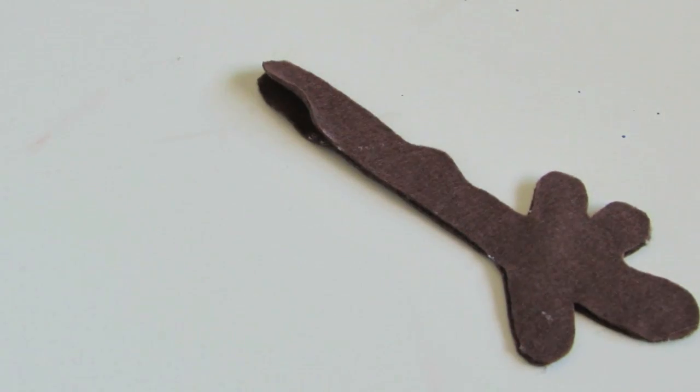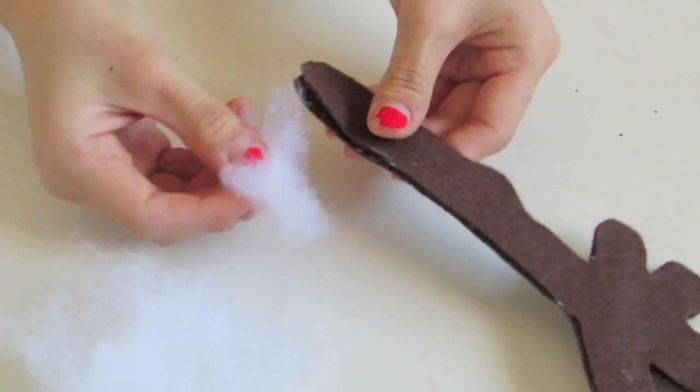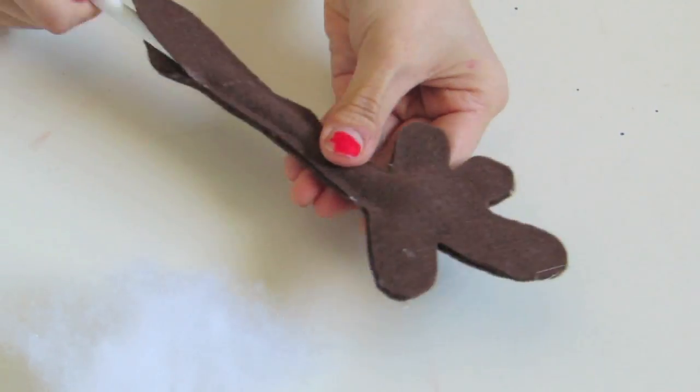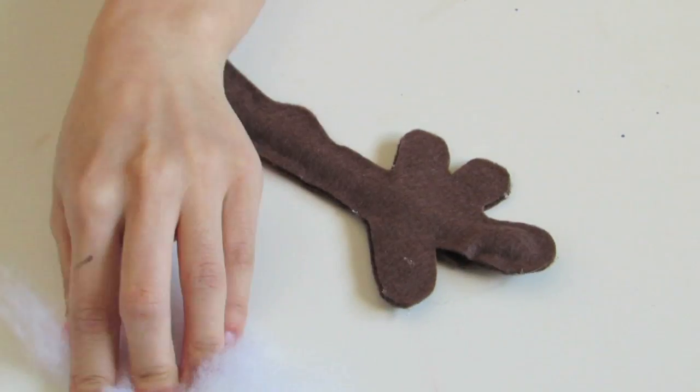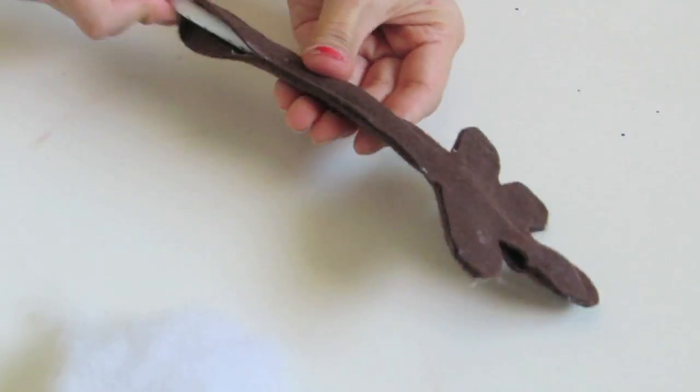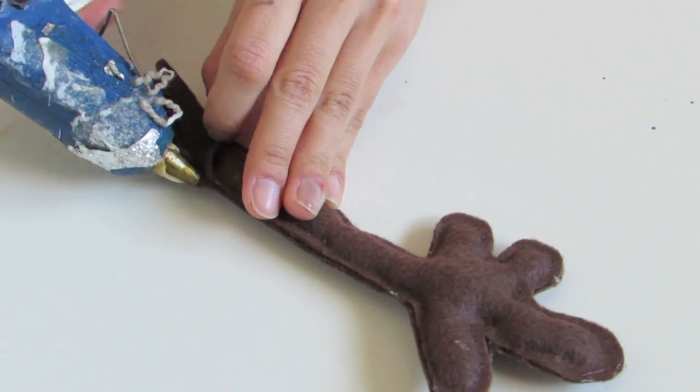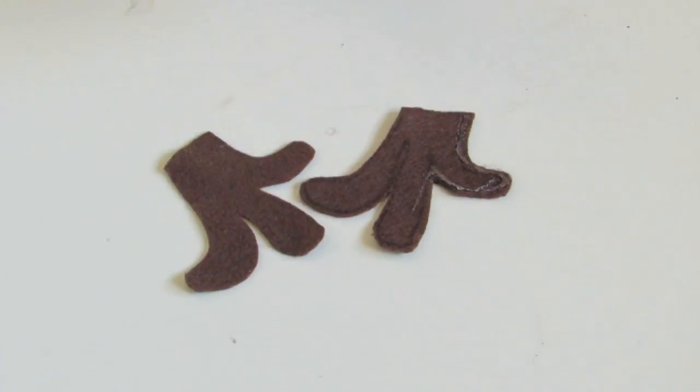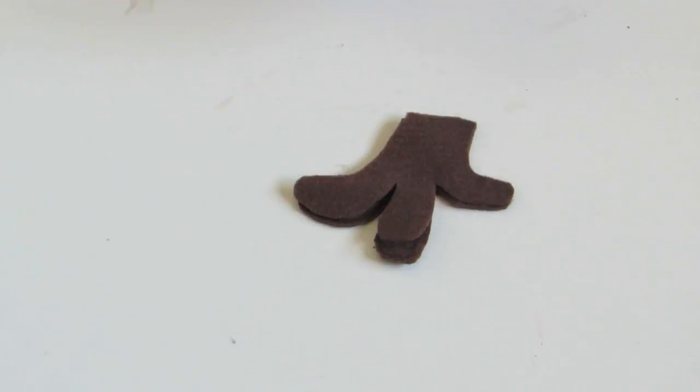And don't forget to leave a little bit of room at the bottom so that you can stuff it. You'll need a pencil and just kind of stuff it. Make sure you get it all the way to the ends of the fingertips and just keep stuffing until the whole arm is stuffed. Once it's all done, just glue the opening closed. And you just want to do the same for the little hair piece.